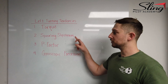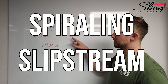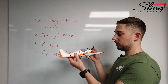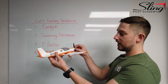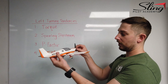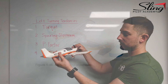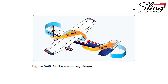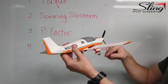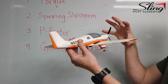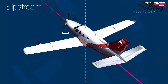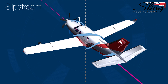Number two is called spiraling slipstream. When an aircraft is moving forward through the sky, as the blade moves around, it creates a corkscrew effect — that's what the FAA calls it. As the air comes through the blade, it goes over the airframe moving clockwise, spiraling around the aircraft.